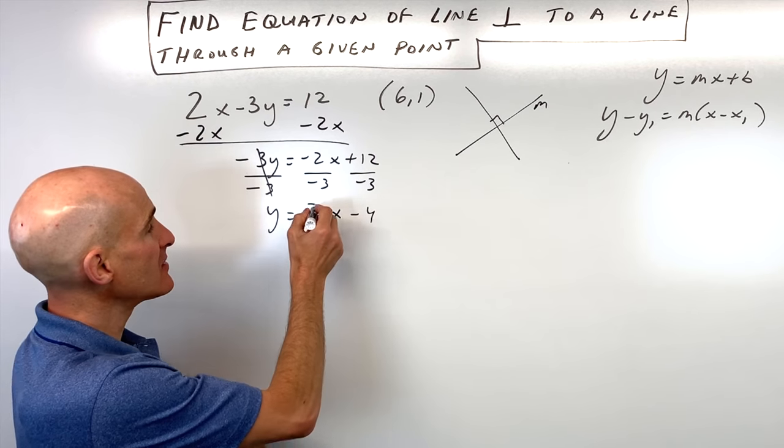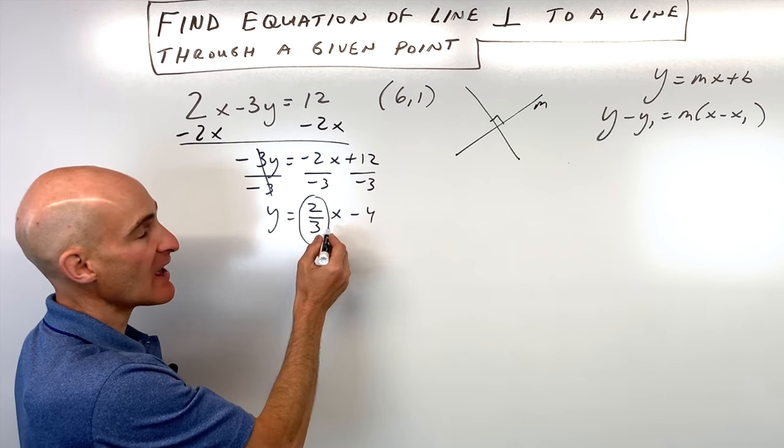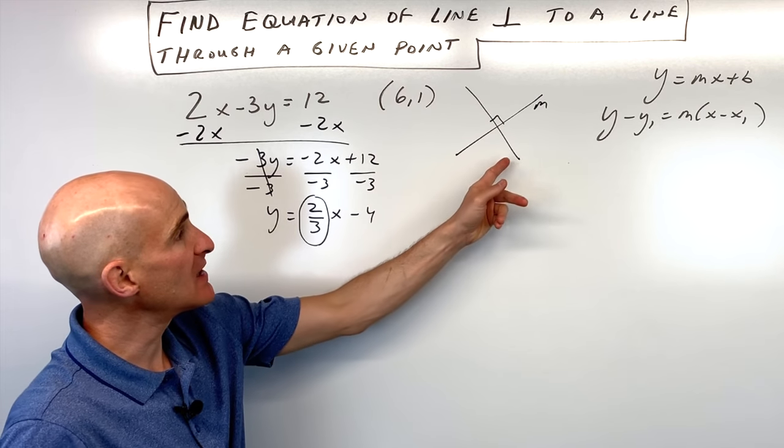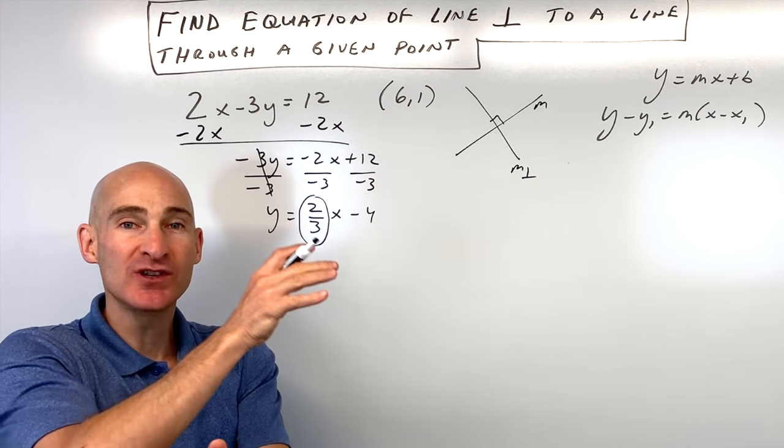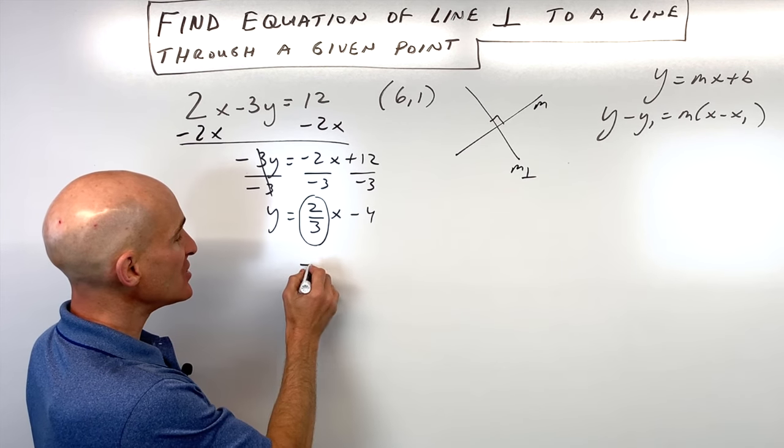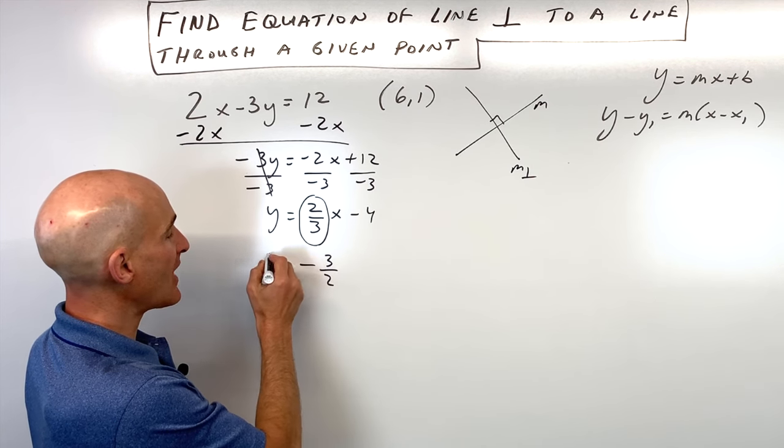Now we can see that our slope is 2 thirds, that number in front of the x. To find the slope of the perpendicular line, we're going to take the opposite reciprocal, meaning we change the sign and flip the fraction to get negative 3 halves.